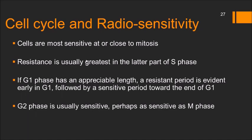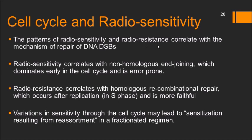The pattern of radiosensitivity and radioresistance correlates with the mechanism of repair of DNA double strand breaks. Radiosensitivity correlates with non-homologous end joining, which dominates early in the cell cycle and is error prone. Radioresistance correlates with homologous recombination repair, which occurs after replication in S phase and is more faithful. Variations in sensitivity through the cell cycle may lead to sensitization resulting from reassortment in fractionated regimens — to be discussed in the third lecture. Thank you very much; please complete the MCQs before moving on to the next lecture.